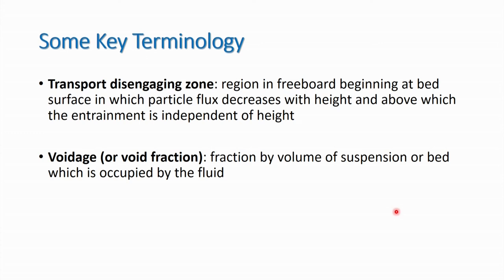Transport disengagement zone is the region in the freeboard beginning at the bed surface in which particle flux decreases with height and above which the entrainment is independent of height — this term is used in relation to entrainment. Voidage or void fraction is the fraction by volume of the suspension or bed which is occupied by the fluid.